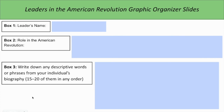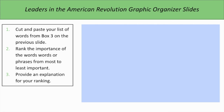On this slide, you can see the Leaders in the American Revolution Graphic Organizer, where we'll ask students to write the leader's name in the first box, their role in the American Revolution in the second box, and in box three, write down any descriptive words or phrases from their individual's biography — 15 to 20 of them in any order. We'll then ask students to rank the importance of words or phrases from most to least important and provide an explanation for their ranking.